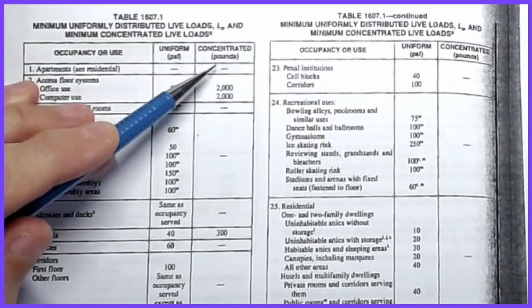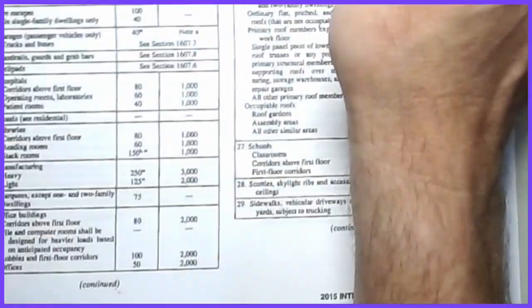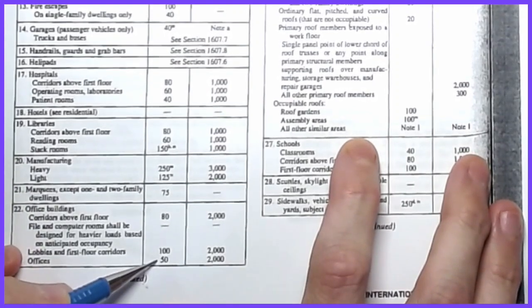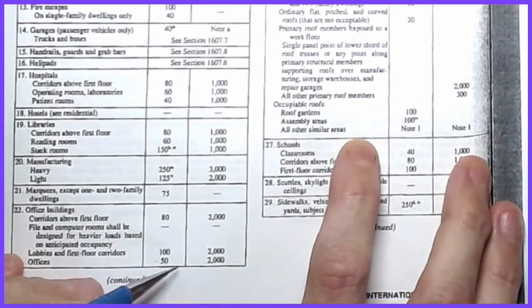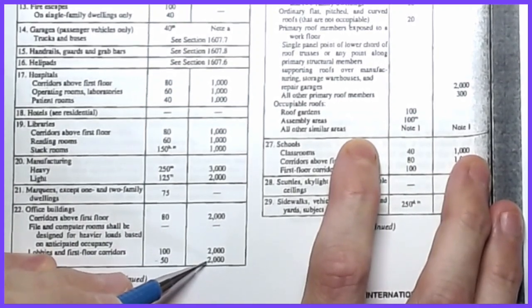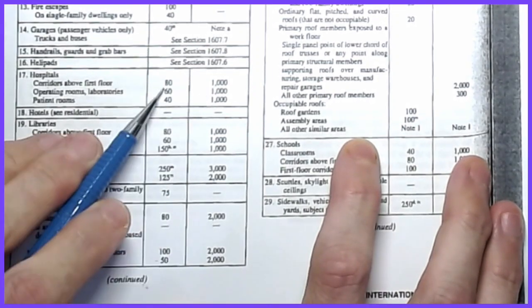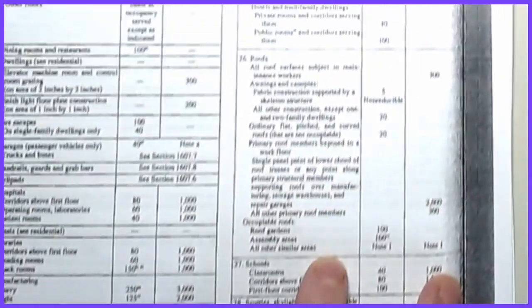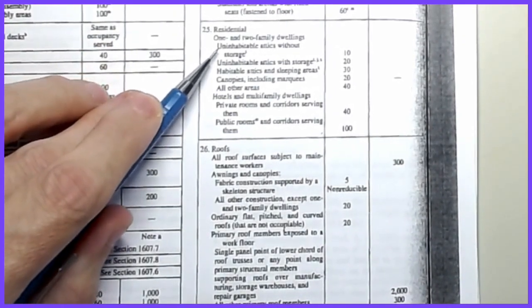For a general office building, the uniform load is 50 psf, but there's also a requirement to be able to apply a 2,000-pound point load anywhere that the 50 psf load applies — placed in the worst possible location from a structural engineering standpoint. For hospitals, the concentrated load drops to 1,000 pounds, but area loads go up: 80 psf for hallways, 60 psf for operating rooms.